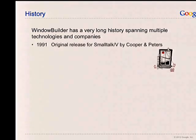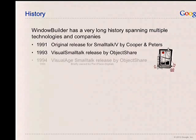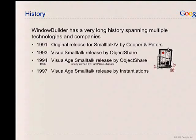The very first release of Window Builder was back in 1991 — a Smalltalk version by a little two-person company called Cooper and Peters. I got involved with it in '92, '93. The first version for DigiTalk Visual Smalltalk was released by my first company, Object Share, which was then acquired by Park Place DigiTalk. And then there was a version of Window Builder for Visual Age Smalltalk from IBM. We spun out, created Instantiations in '97, did another Smalltalk release then — those were all the early Smalltalk releases.